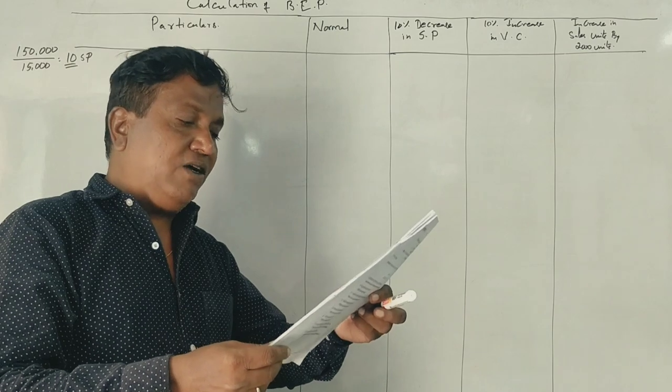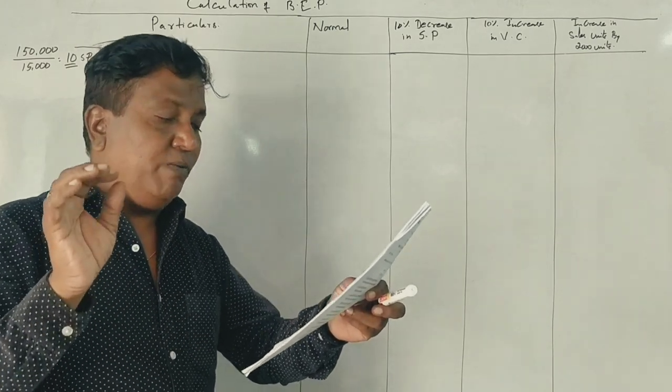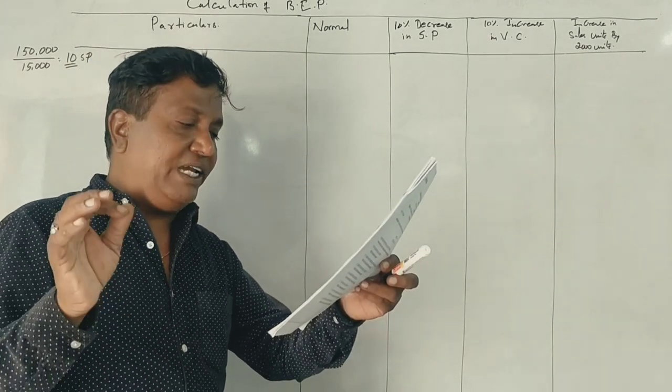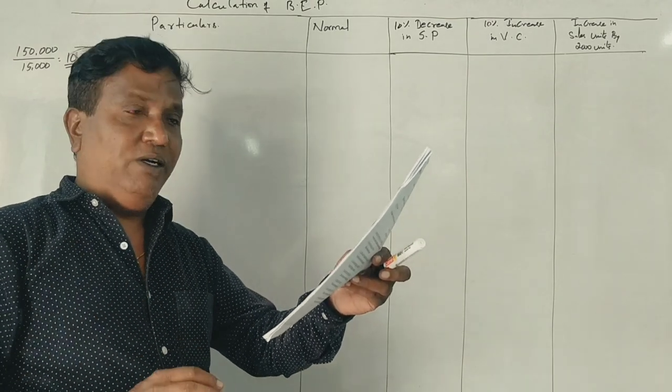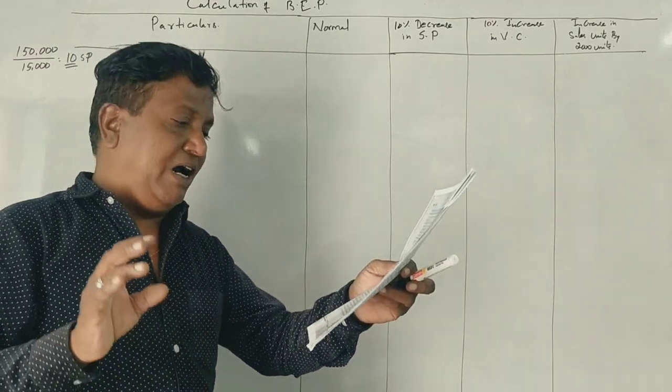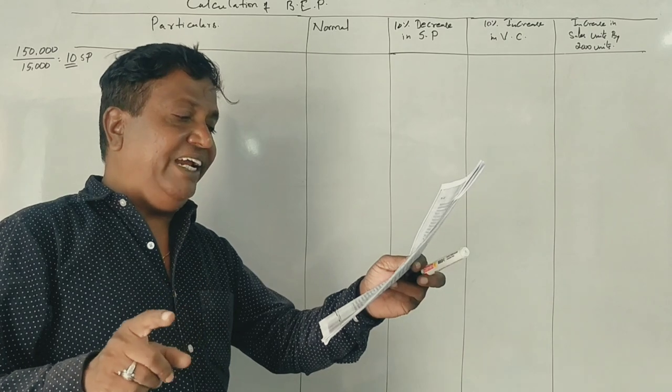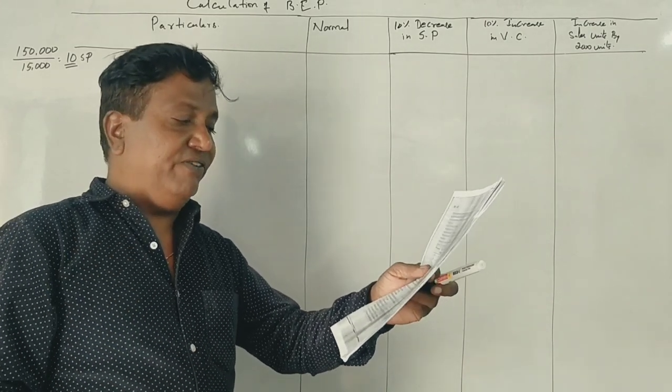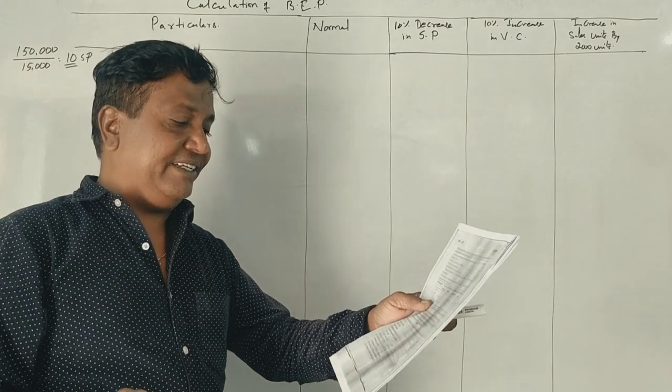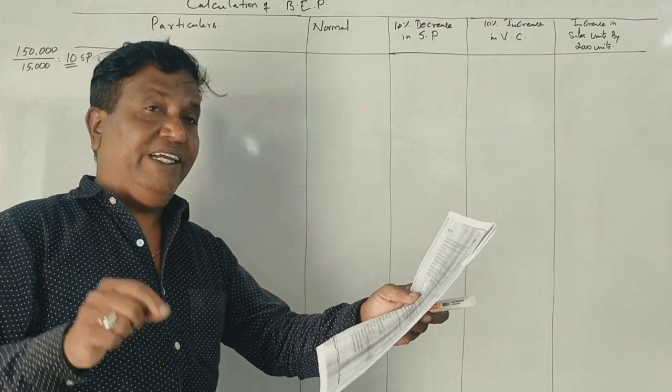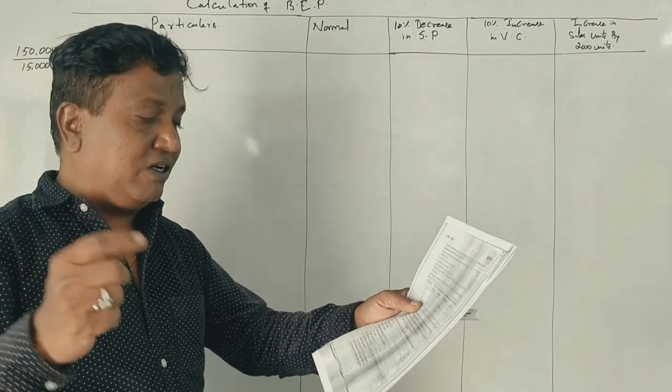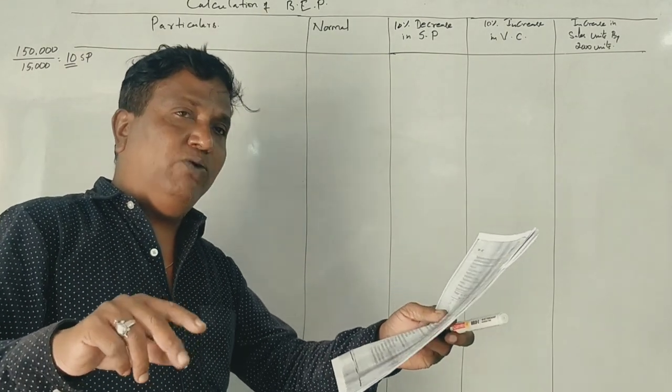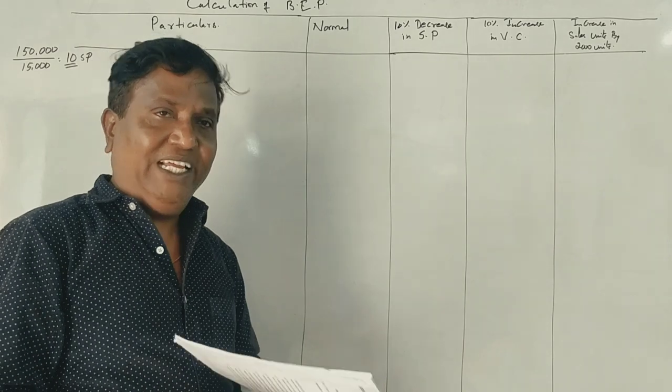You are required to calculate PV ratio, break-even point, margin of safety, and calculate revised PV ratio, BEP, margin of safety in each of the following cases: decrease 10% in selling price, increase 10% in variable cost, increase sales units by 2,000 units.